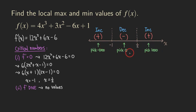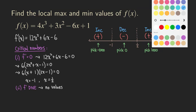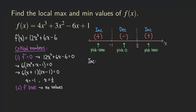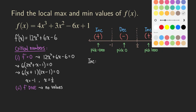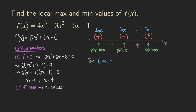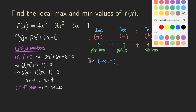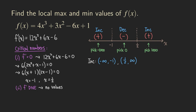We can now write down those results. The increasing intervals for the function are from negative infinity to negative one, and from one half to infinity. The decreasing interval is just one interval: from negative one to one half.